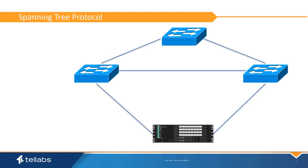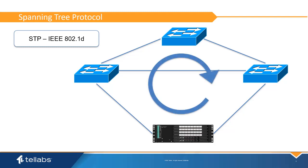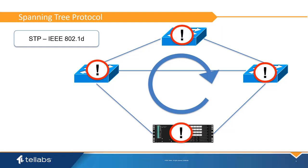Spanning tree protocol was developed initially as part of the 802.1d standard. The primary goal of the standard was to prevent loops within the network. In layer 2 networks, since they represent a broadcast domain, it can be a problem if loops occur because traffic, especially broadcast and multicast traffic, will be looped in the network. This often will result in the network bandwidth being consumed by the looped traffic and disrupting the network.